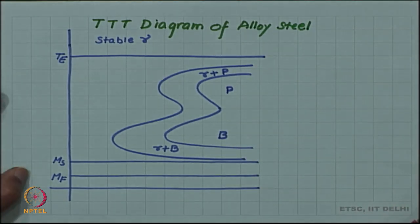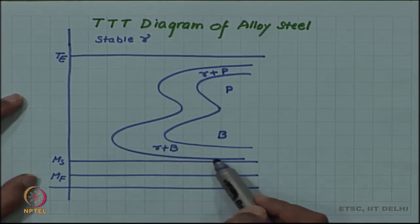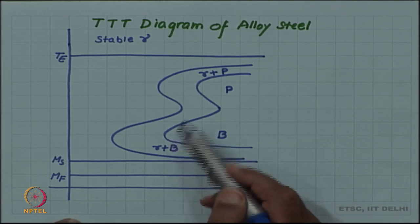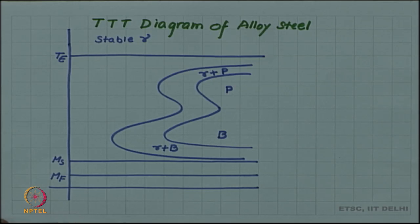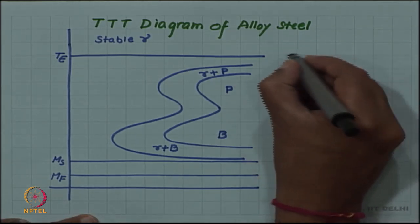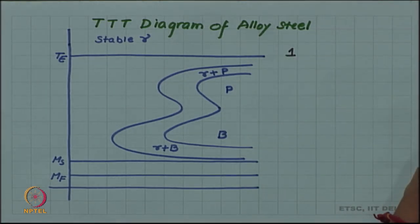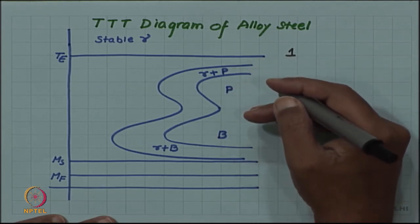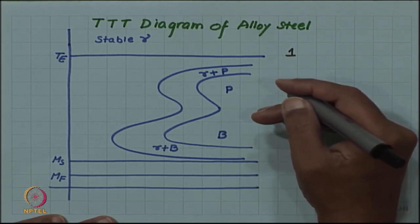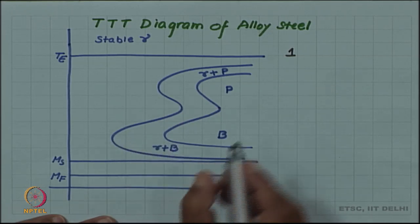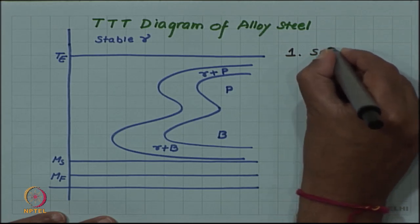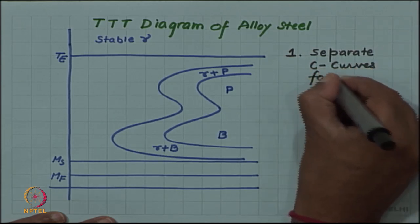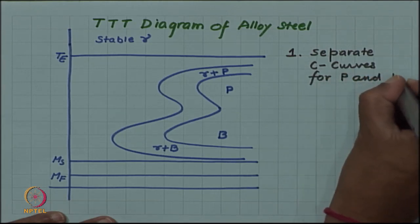First of all, you see that instead of a single nose which was there, we now seem to have two noses. There are two separate C curves - the C curve for pearlite and bainite have been separated. This is the first effect of alloying, that there are separate C curves for pearlite and bainite.